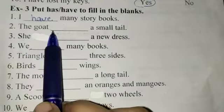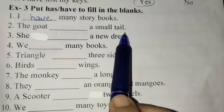Second, the goat blank a small tail. Here, we are talking about only one tail. So, this sentence is singular and for singular we use has.